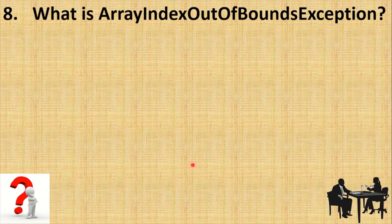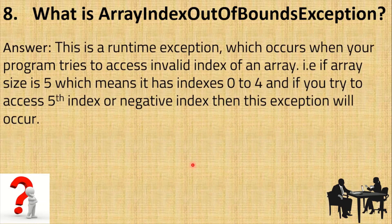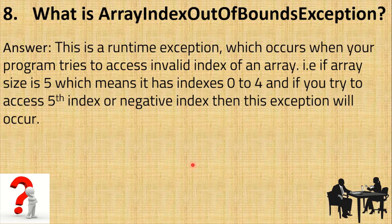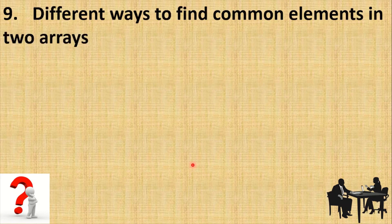Next: what is ArrayIndexOutOfBoundsException? This is one of the most common exceptions when working with index-based data structures like arrays. It is a runtime exception that occurs when the program tries to access an invalid index. For an array of size 5, valid indexes are 0 to 4. If you try to access index 5, 6, or any index less than 0, this exception will occur.